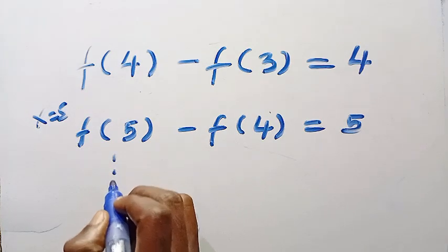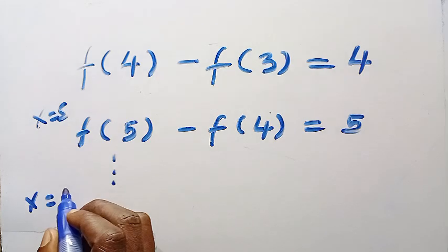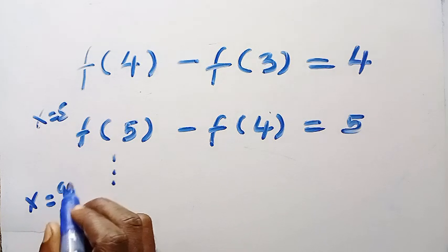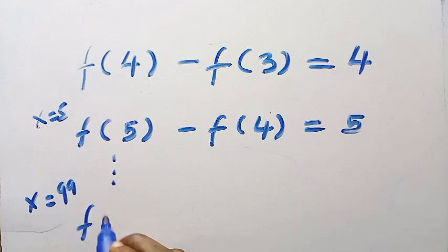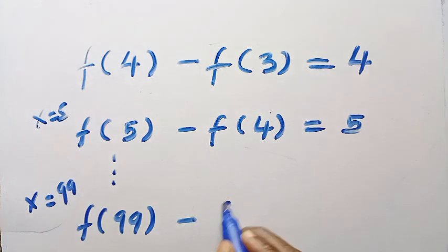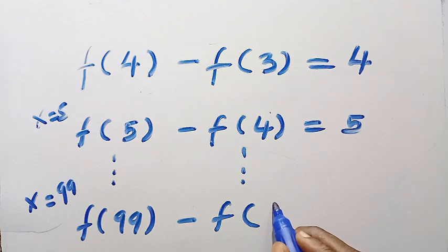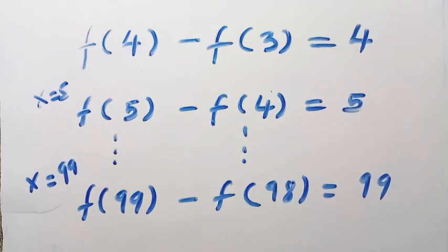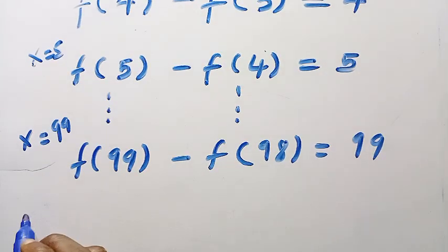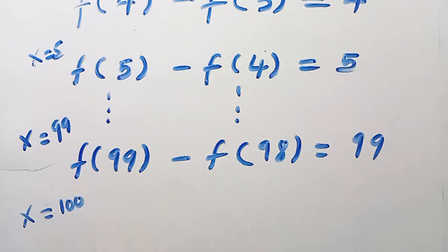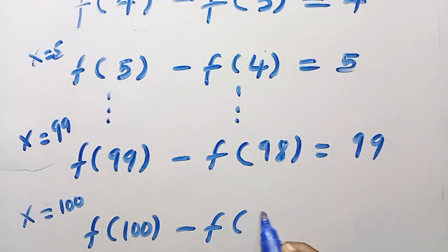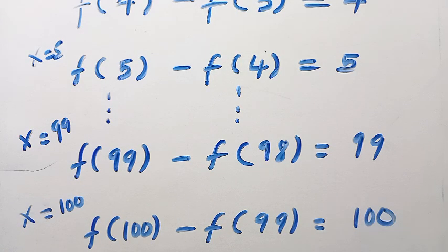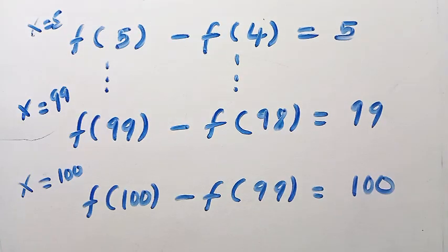We have this as a continuous series. Let's say we continue like that. If I test for x = 99, we are going to have f(99) - f(98) = 99. We are still following the formula f(x) - f(x-1). Finally, if I test for x = 100, we have f(100) - f(99) = 100. I will stop here because what I need is f(100).